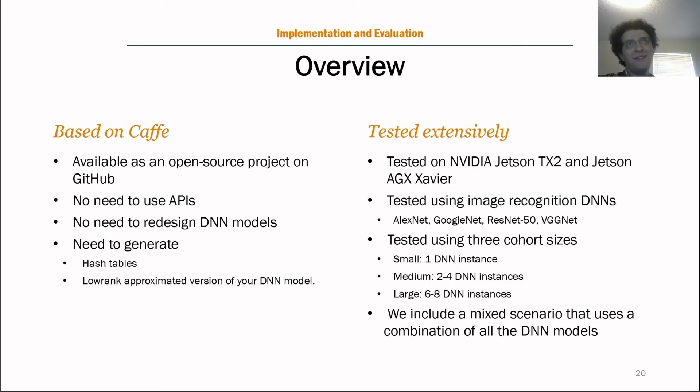So now comes the interesting stuff. Our implementation and evaluation. Our implementation is based on Caffe, and we made it available as an open source project. To use NeOS, you don't need to use any APIs or change your model. You do need to, however, generate hash tables for DVFS configurations for each platform and each DNN. You also need to generate the lower-rank approximation version of your DNN model. The scripts for this we already provide. So this initial cost of preparing these tables and the low-rank model has to only be incurred once and will substantially reduce the runtime complexity of our approach, making it efficient as a real-world solution.